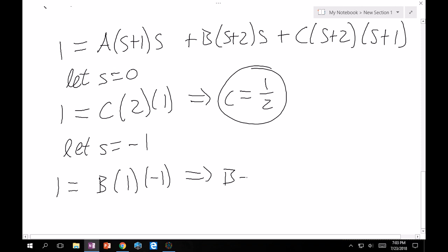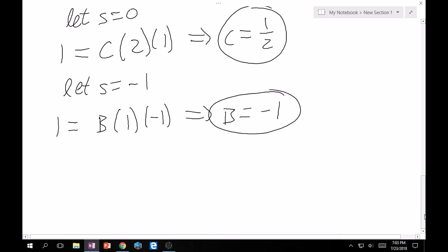And then finally, we let s = -2. Then all we have left is the A constant. So we know that 1 is going to stay. And then -2 + 1, so -1 times s by itself, so -2. Therefore, this goes to 2, which also implies that A = 1/2.